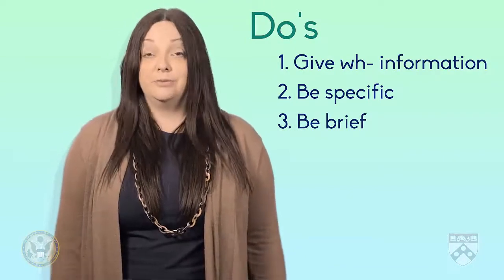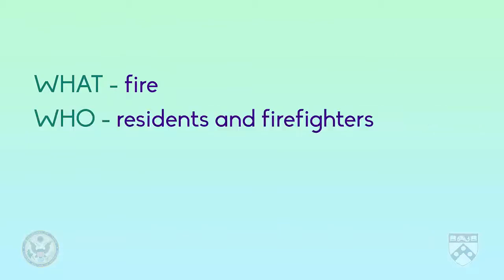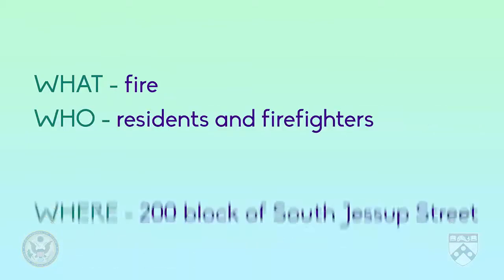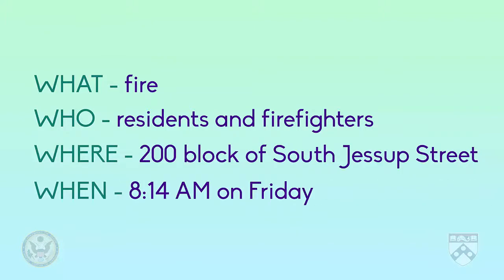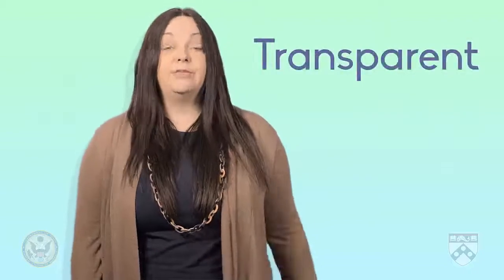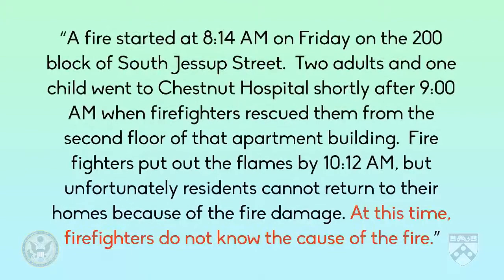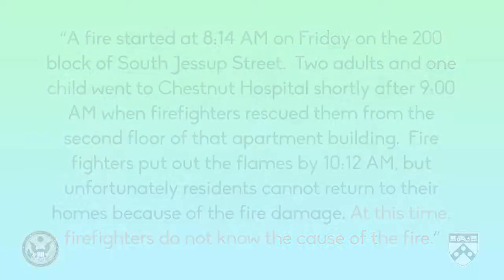Let's look at WH information first. We can see what happened — a fire — who was involved — residents and firefighters — where it happened — the 200 block of South Jessup Street — and when it happened — 8:14 a.m. on Friday. Can we tell why the fire started? No, but the journalist was transparent about their process for finding that information. They said firefighters didn't have that information at the time the news story was published. Remember, transparency is one of the principles of journalism we talked about in Unit 1.